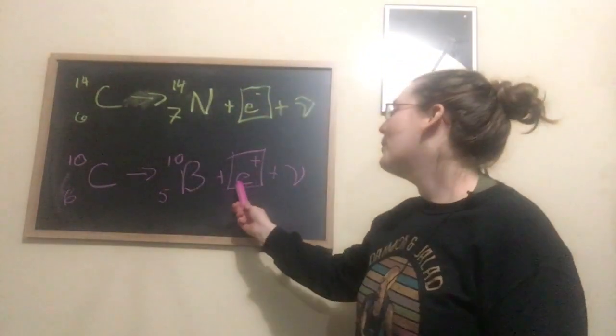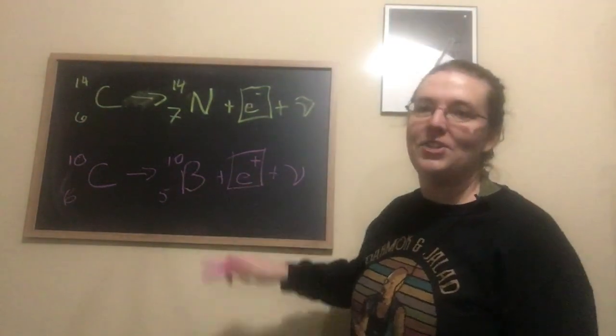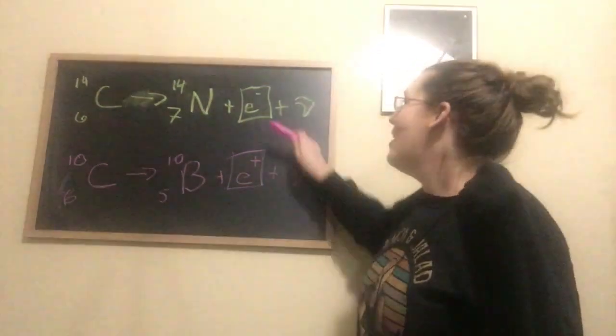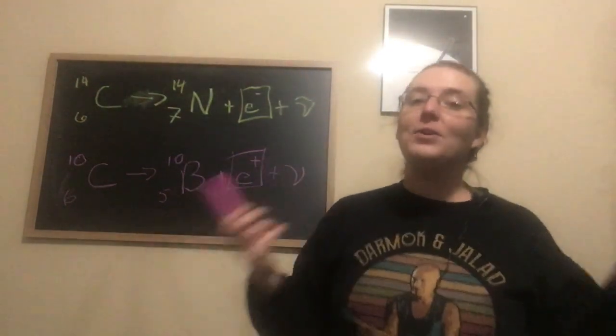So that would be one way of how we get our positrons. Just two examples of how we get our beta minus and beta plus particles that are also called electrons and positrons.